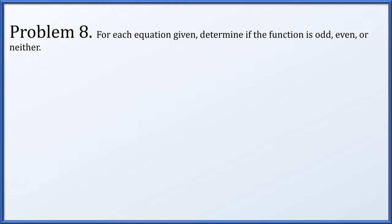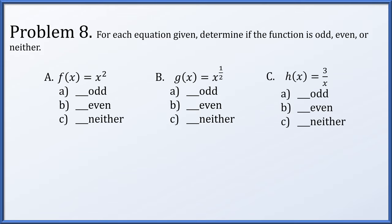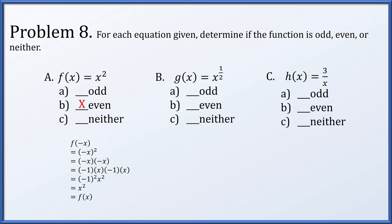In problem 8, we're given several equations and asked to determine if the functions are odd, even, or neither. To determine this, replace x with minus x and see what happens. For f(x) = x squared: f(−x) = (−x)² = (−1)² times x² = x², which equals the original f(x). When f(−x) equals f(x), that is an even function. If the minus sign factored out giving f(−x) = −f(x), that's an odd function. Otherwise it's neither.